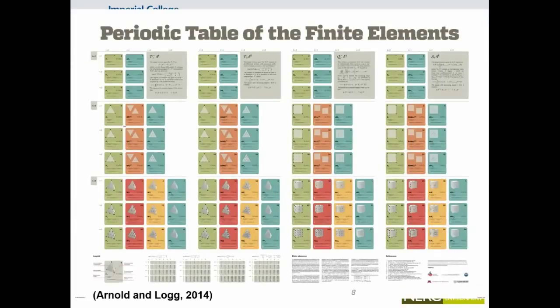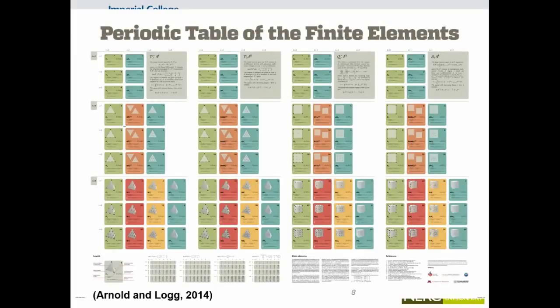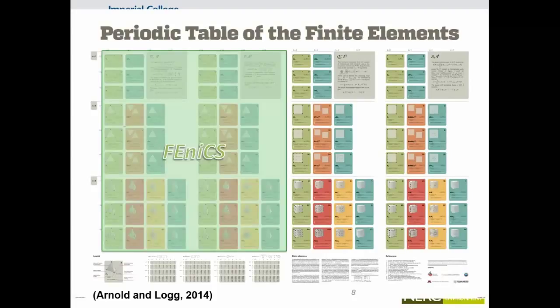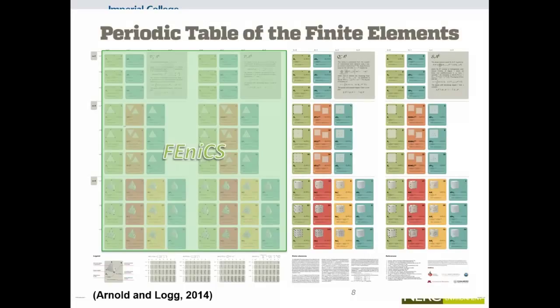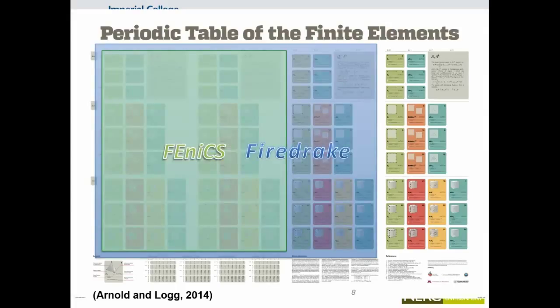So Doug and Anders made this periodic table of finite elements, which contains a set of useful finite element function spaces for mixed problems. As you can see in the first two blocks, there are simplices. And on the second two blocks are the hypercubes. Phoenix has support for all the simplex function spaces in this periodic table. And FireDrake has now support for this whole third block as well. And actually having support for the fourth block only requires someone to do the legwork to implement these elements in FIAT, because the infrastructure is otherwise ready.